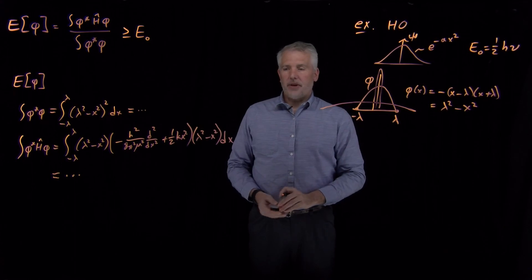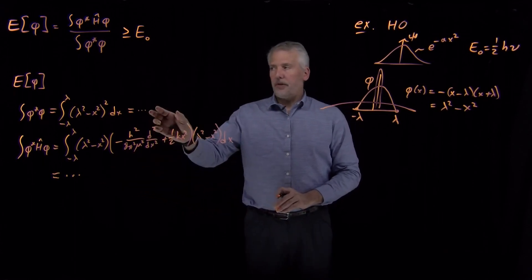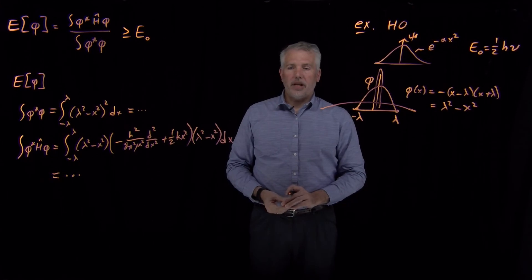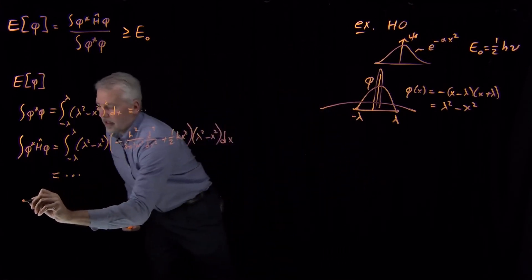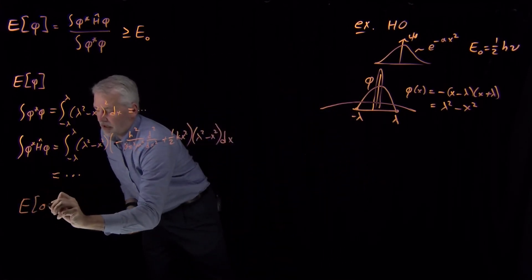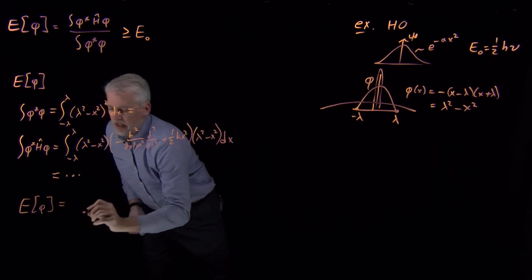If I integrate that result from negative lambda to positive lambda, I'll get some other expression involving lambdas and a bunch of fundamental constants. If I then take the numerator divided by the denominator as described by the variational equation, then the net result, again skipping all the algebra, is going to be...